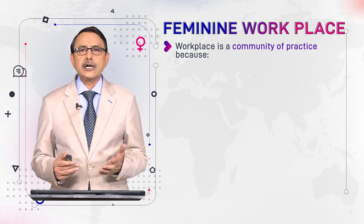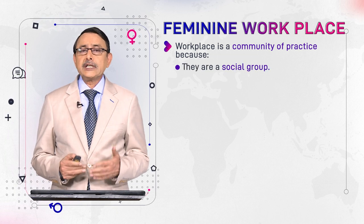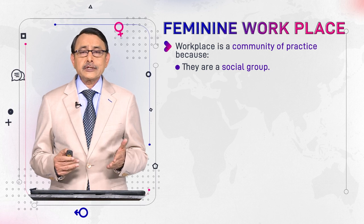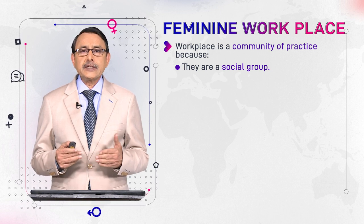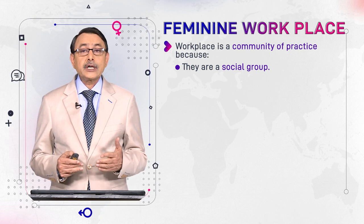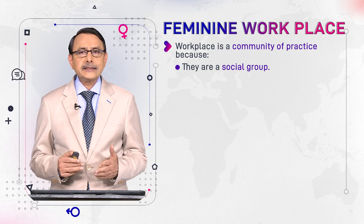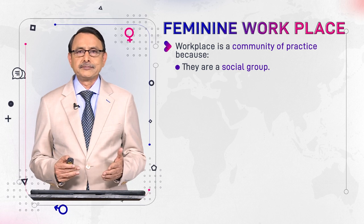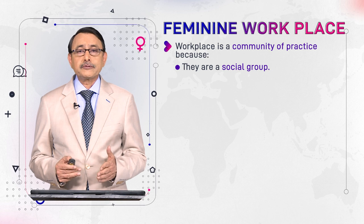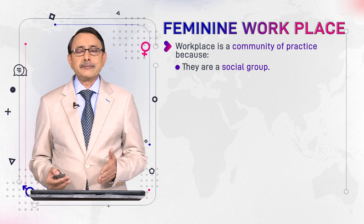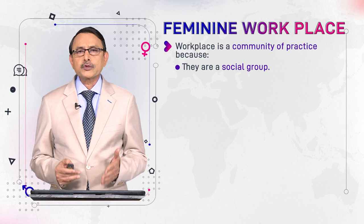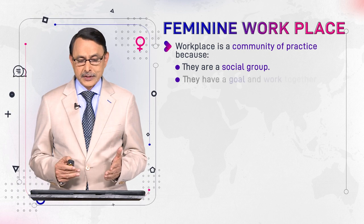Number one: they are a social group. When we say social group, it is to differentiate it from anti-social groups — those are groups which are not desired by the society and don't contribute positively to it. So the first thing that makes a community of practice different from other groups is that it is a socially desired group.